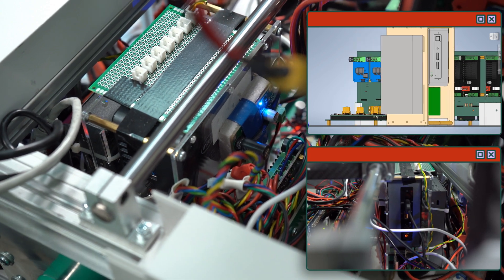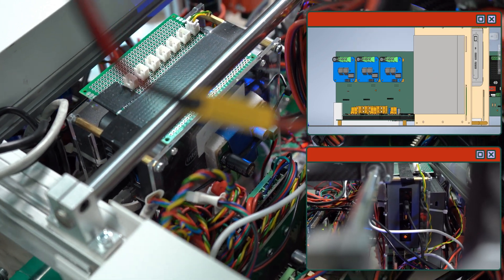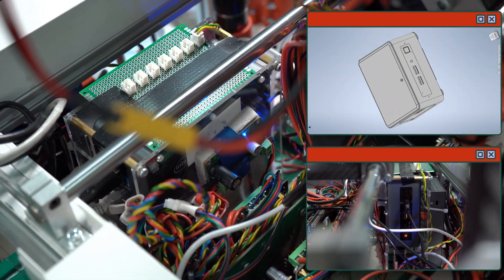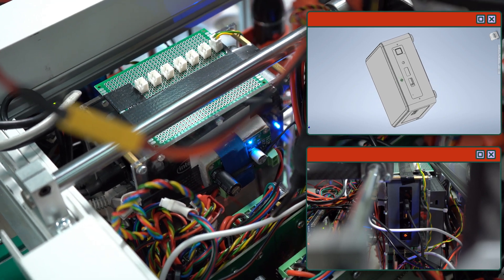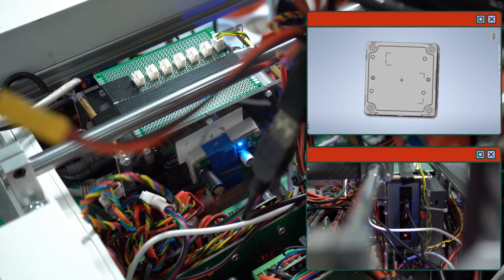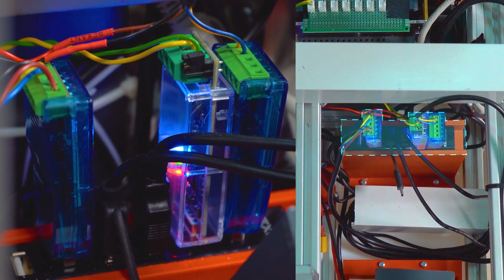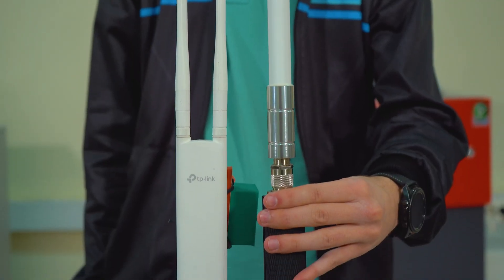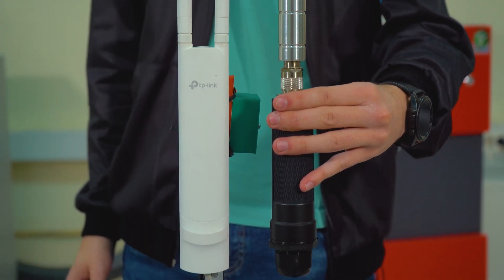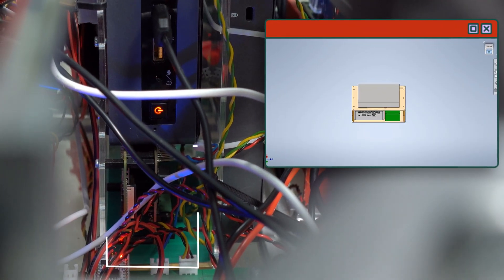Intel NUC is used as the main computer of the rover. It runs Ubuntu 22 and ROS2 Humble operating system. Excessive processing power of the NUC comes in handy during the autonomous mission. It is connected to low-level boards via the USB to CAN module. We are using TP-Link long-range Wi-Fi for communication.